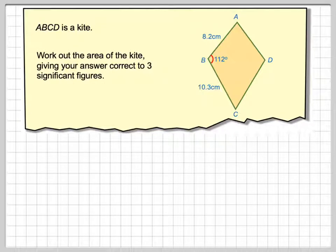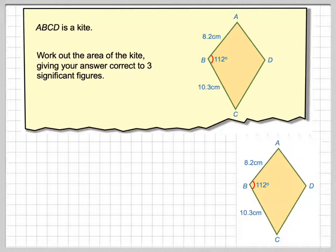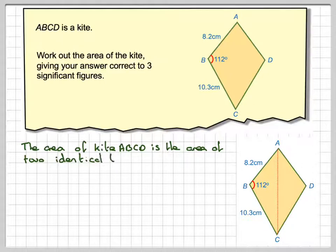It says work out the area of the kite given your answer correct to three significant figures. So if we draw it here, what we need to do is draw in a line and realize that we have two identical, or two congruent triangles. Congruent means they're exactly the same size, so the area of the kite ABCD is the area of these two identical triangles.